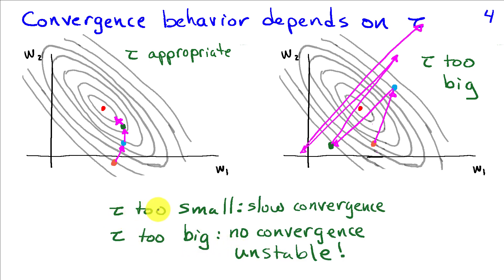So if tau is too small, then it takes many, many iterations because each step is very tiny. On the other hand, if tau is too big, then you never converge and you end up with an unstable solution.